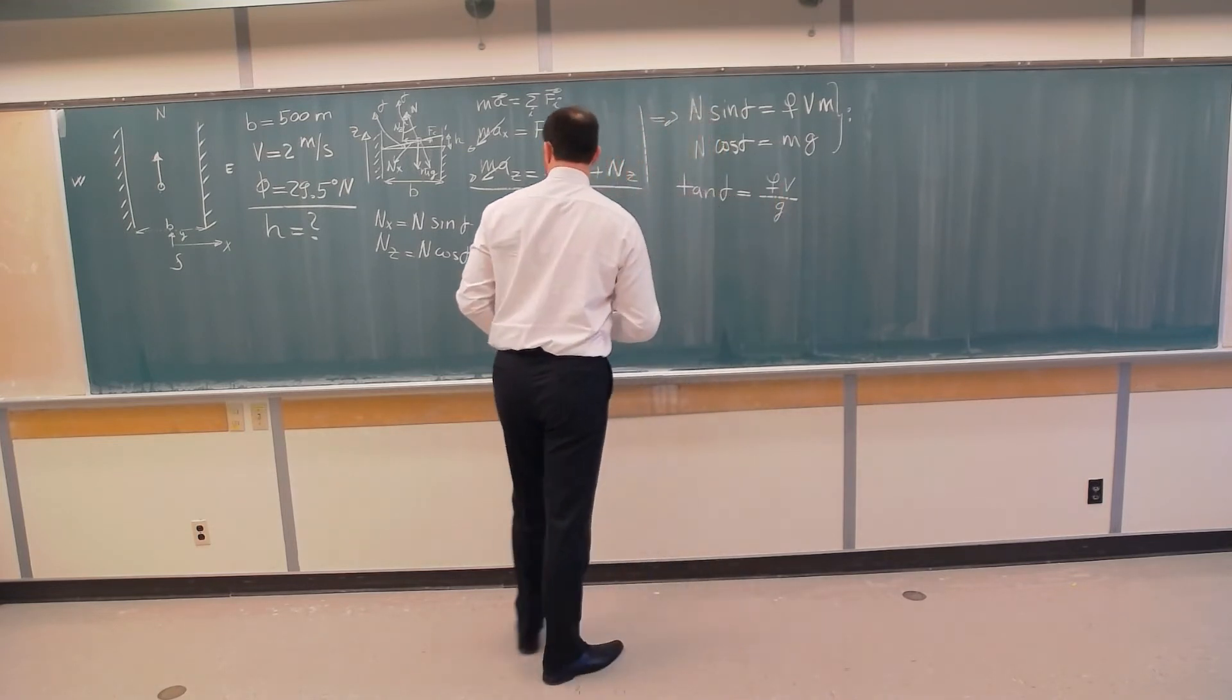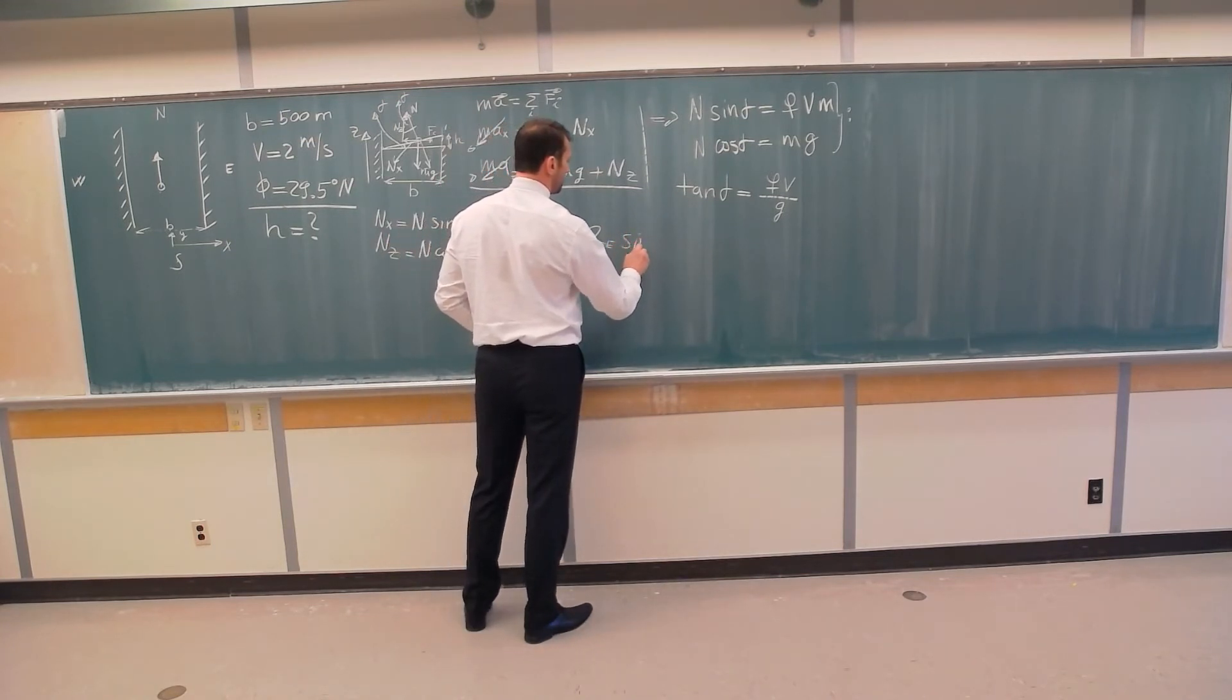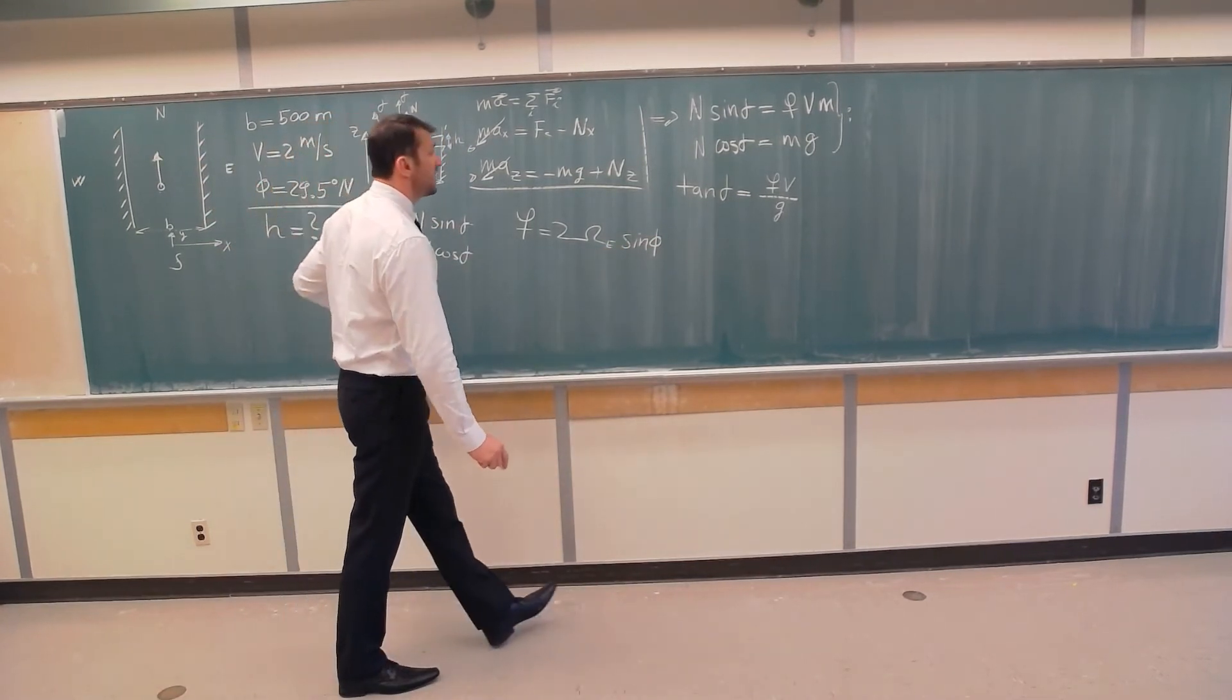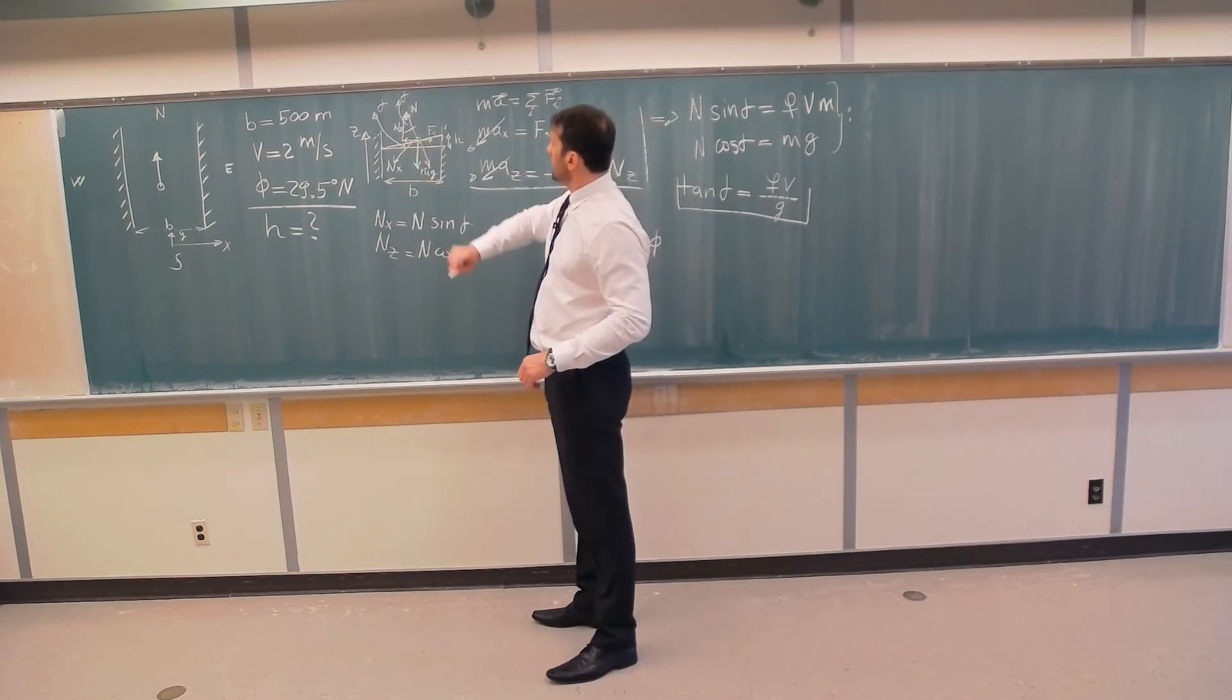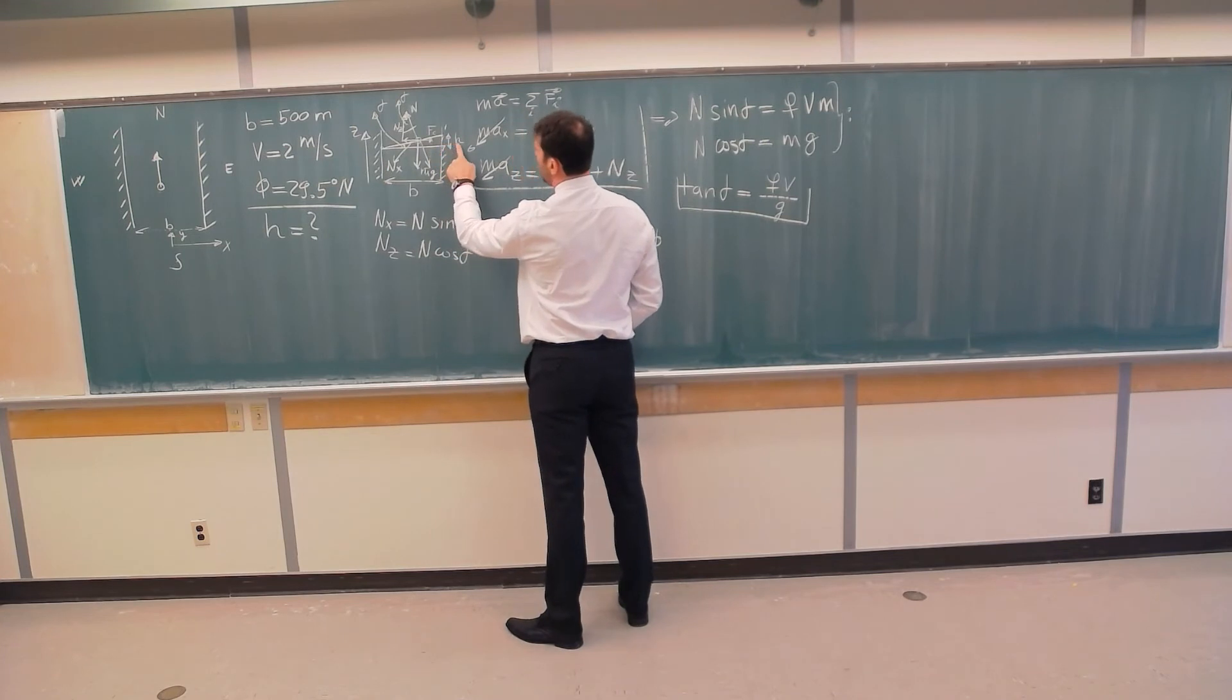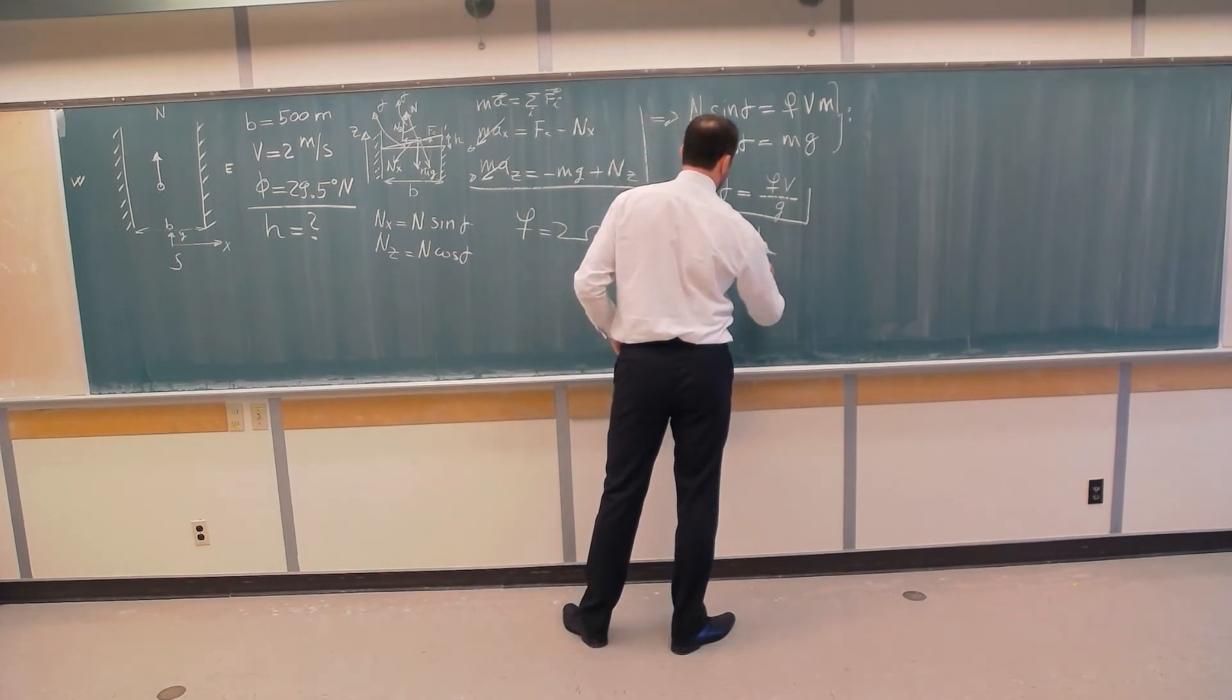Where f, of course, you should know that f is the Coriolis parameter from my previous videos: 2 omega of the earth, angular velocity of the earth, sine phi, where phi is latitude that is given, 29.5 degrees north. So this is tangent of this angle alpha. But from geometry, if this is angle alpha, tangent of alpha is h, opposite, divided by b, adjacent. So tangent alpha from geometry is h over b.